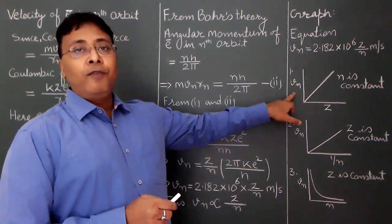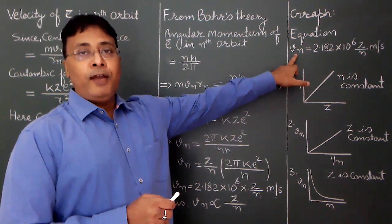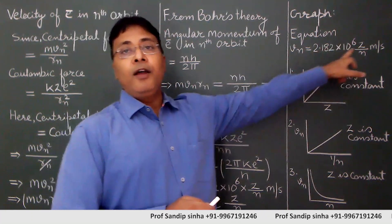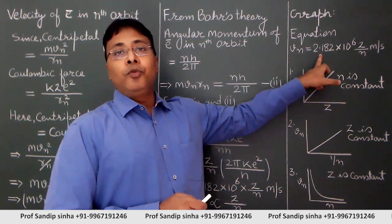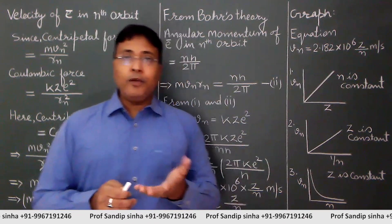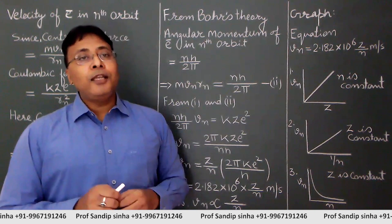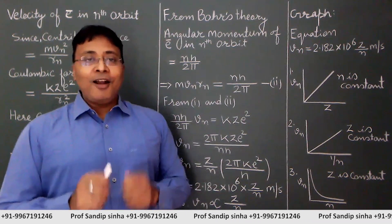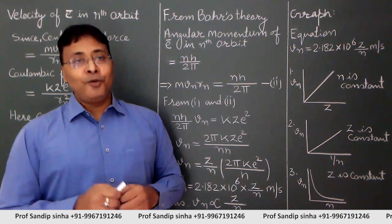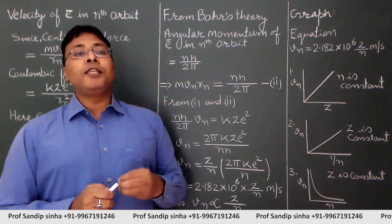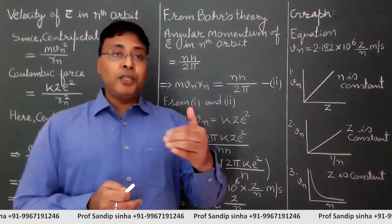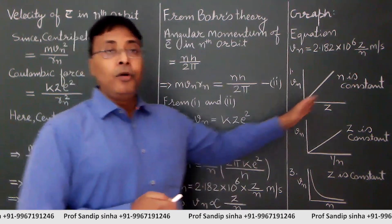With y = vn and x = z, the equation becomes y = kx where k = 2.182 × 10⁶/n is constant. This matches y = mx + c with y-intercept c = 0, so the graph is a straight line passing through the origin.